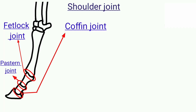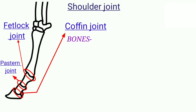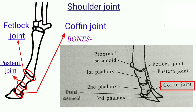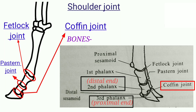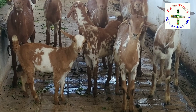Sixth is the coffin joint, or distal interphalangeal articulation. The type of joint is also hinge joint. The bones involved in the coffin joint are the distal end of the second phalanx with the proximal end of the third phalanx and the distal sesamoid bone.